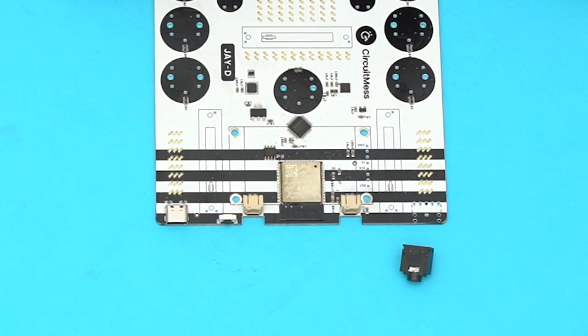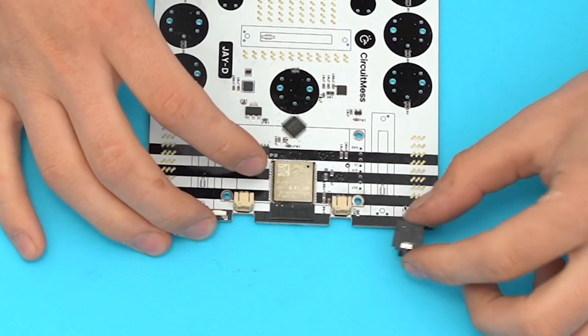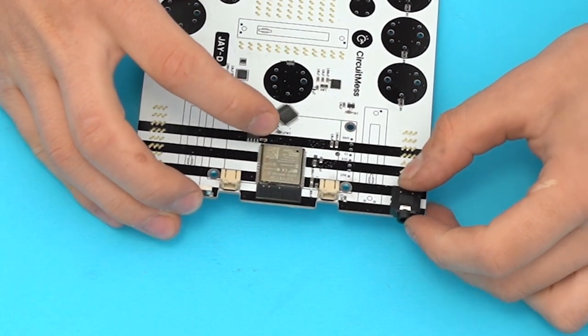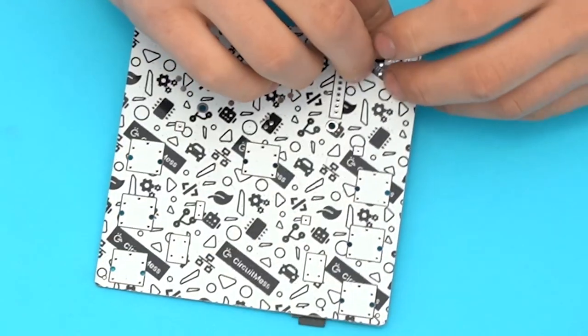Ok, now we're ready to finally start soldering. First take the main circuit board and the headphone jack. Place it on the top left corner of the board, then flip the board and solder all five pins.